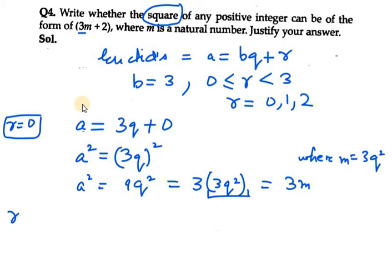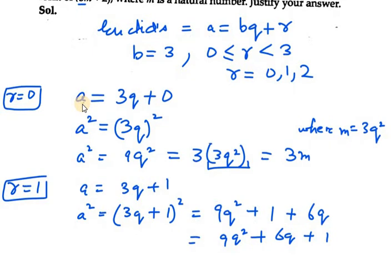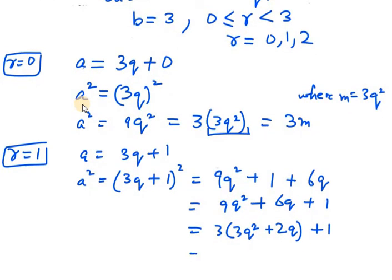Next, when r equals 1, a is 3q plus 1. We need to take square of it, so 3q plus 1 whole squared. This gives 9q squared plus 1 plus 2 into 3q, which is 6q. So 9q squared plus 6q plus 1. We can take 3 common from first 2 terms, so we get 3 times (3q squared plus 2q) plus 1, which equals 3m plus 1.